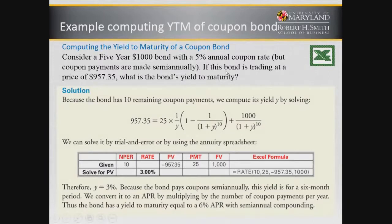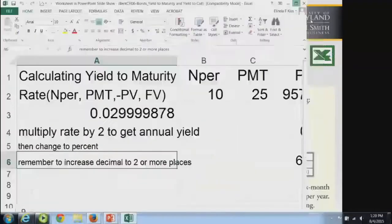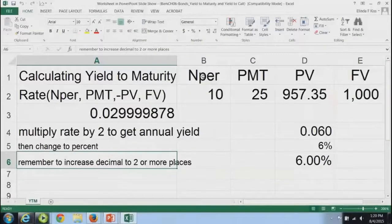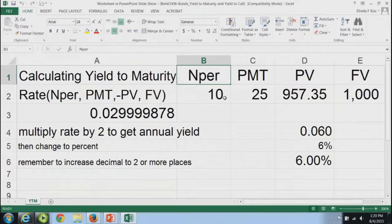If it's semi-annual and five years, that's 10 remaining coupon payments. We can solve by trial and error, or it's a lot easier to solve with Excel using our RATE function. What we would do here is put in the number of periods — we put in 10, because five years semi-annual equals 10 payments.